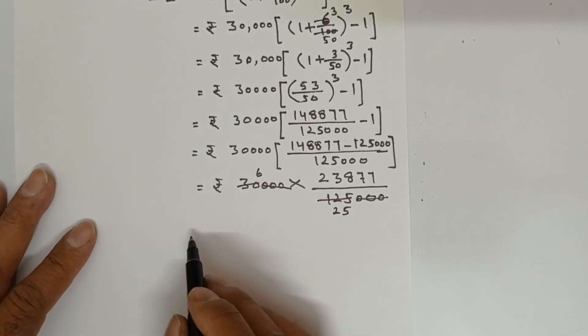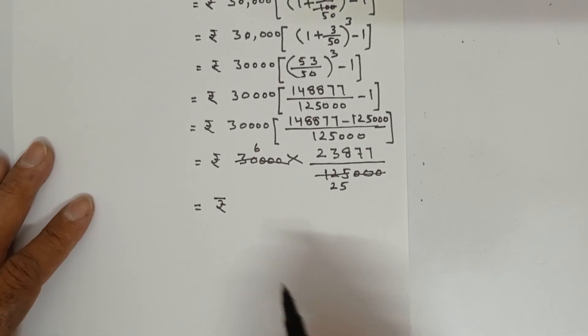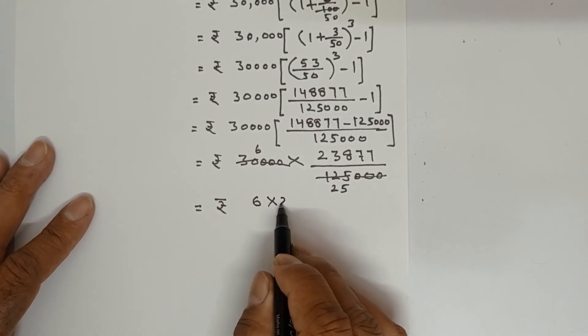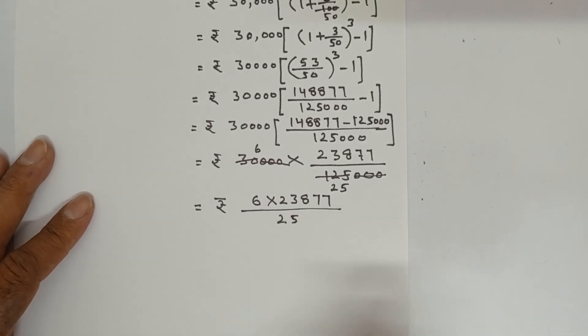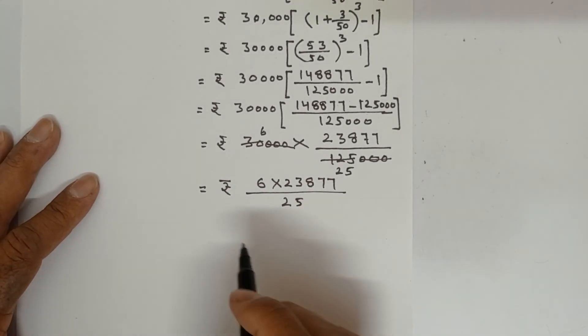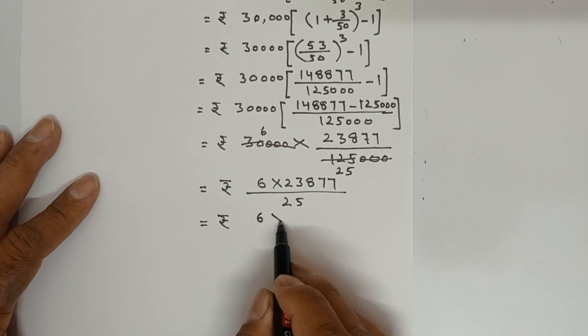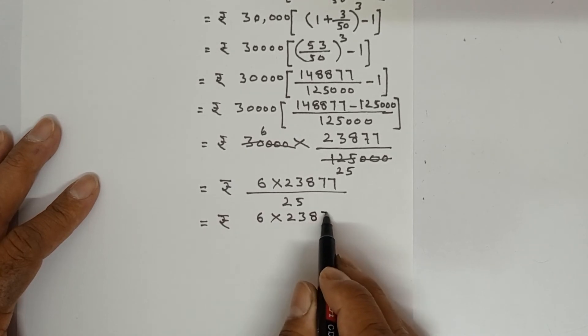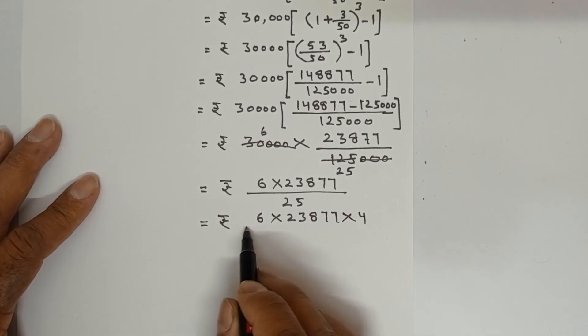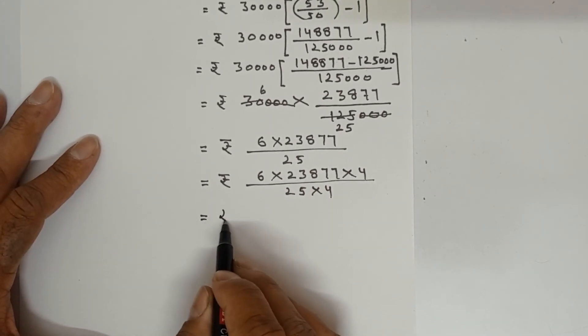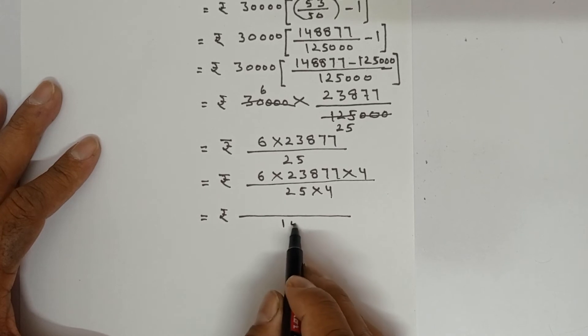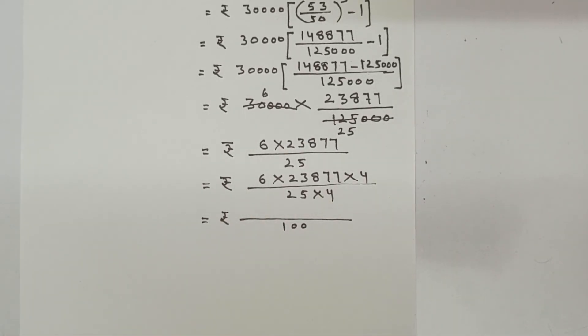Now cancellation is not possible. How to make the calculation easy I will tell. 6 into 23,877 upon 25. Now if I multiply the numerator part and then divide by 25, calculation will become very long. So I have to make the denominator 100. So what will I do? In the numerator, I will multiply by 4 and same thing I will do in denominator also.